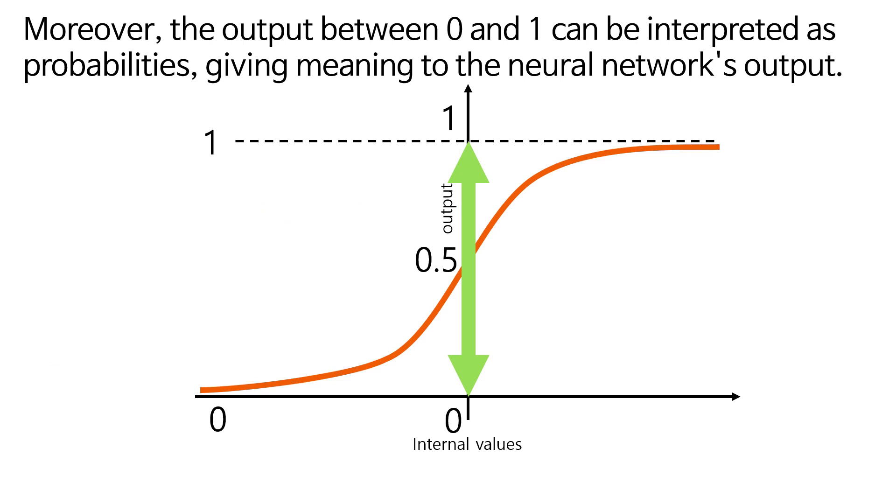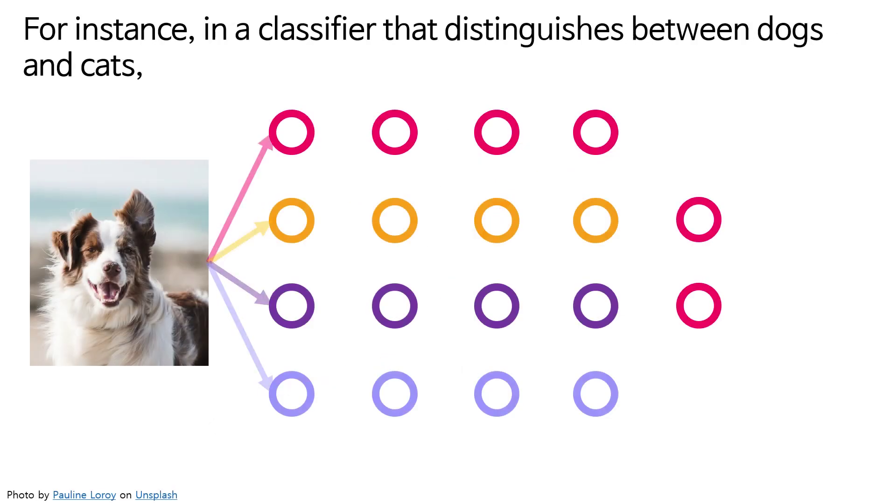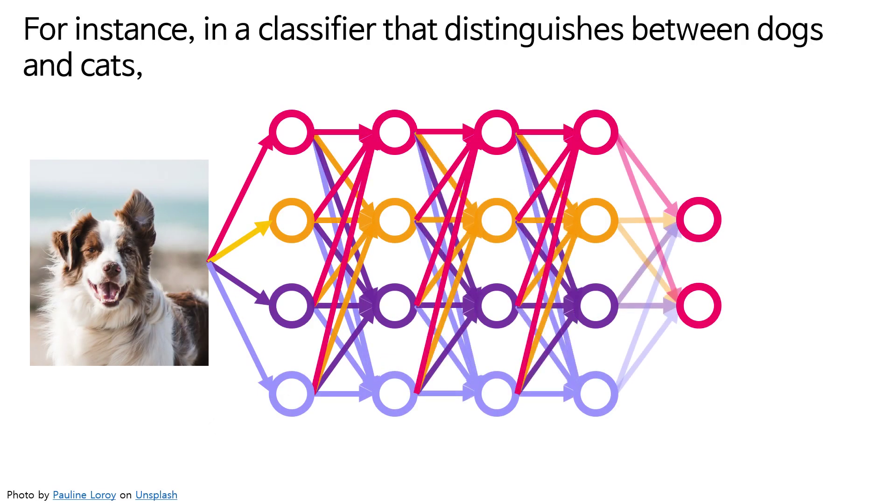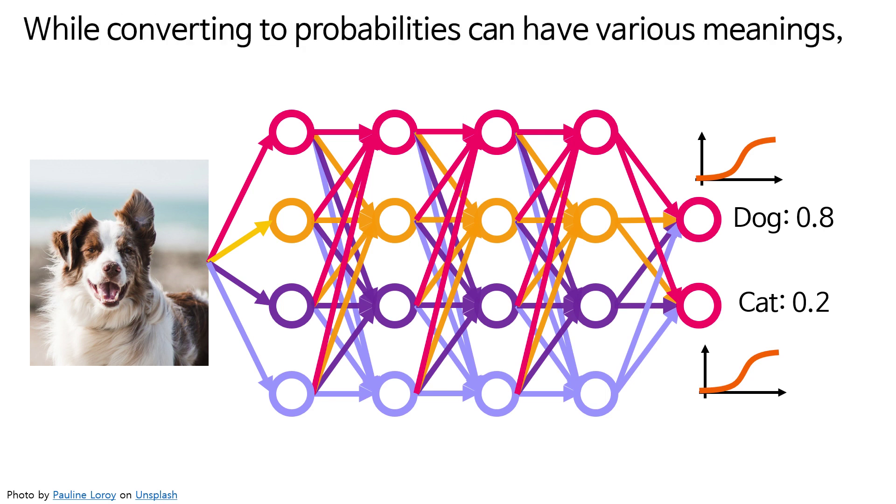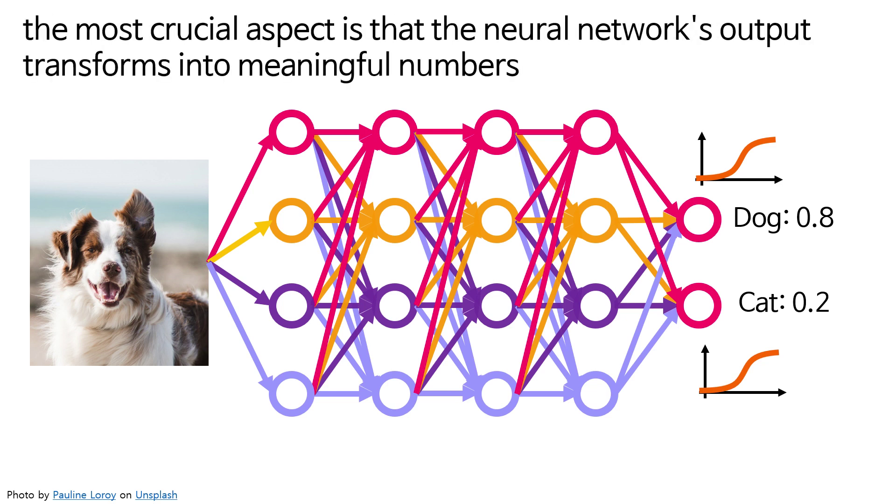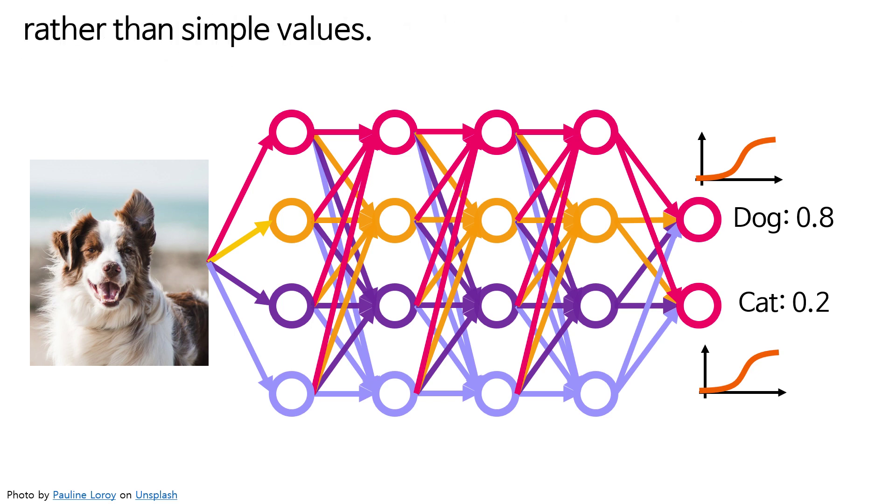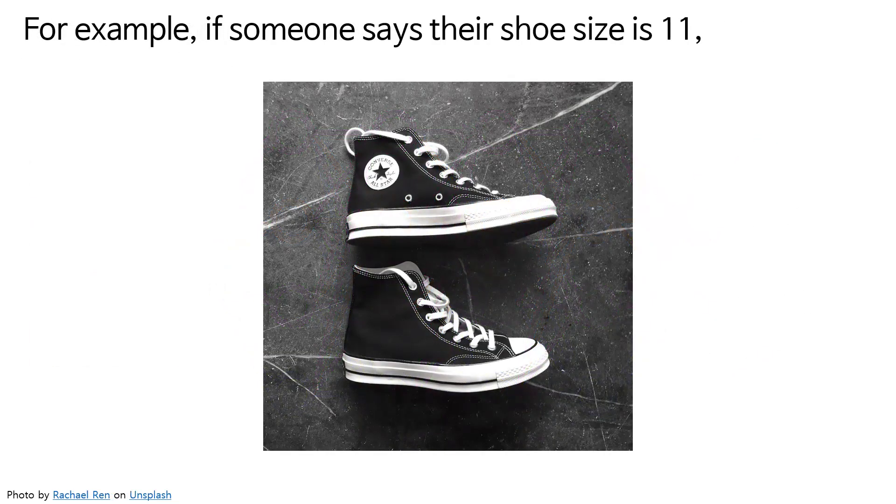For instance, in a classifier that distinguishes between dogs and cats, the sigmoid function can output probabilities between zero and one. While converting to probabilities can have various meanings, the most crucial aspect is that the neural network's output transforms into meaningful numbers rather than simple values.